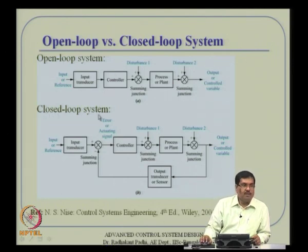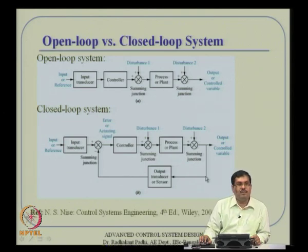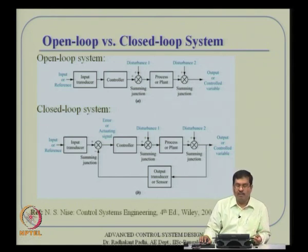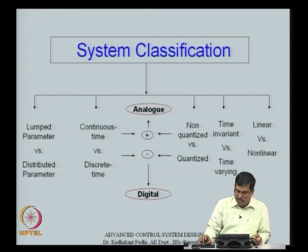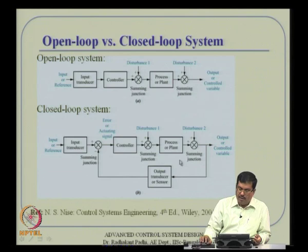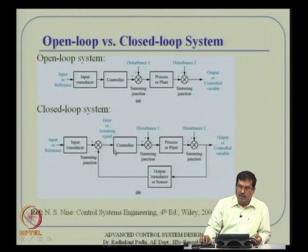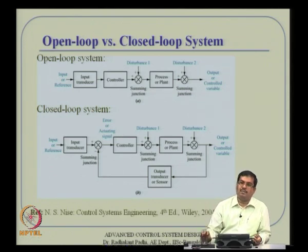In contrast, closed loop systems have a feedback loop that takes sensor outputs — noisy as they may be — and uses that information to generate an error signal compared to the reference. Based on this error signal, the controller corrects the system behavior further. That is the fundamental difference between open loop and closed loop systems.